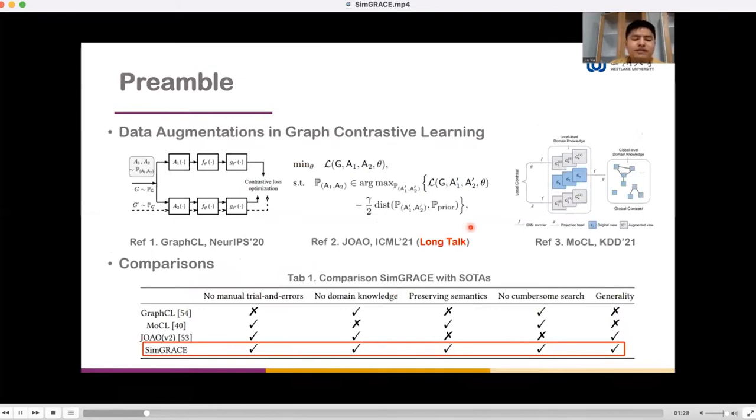Currently, data augmentations in GCL that are designed to preserve semantics broadly fall into three categories. First, the augmentation can be manually picked per dataset by trial and error, like GraphCL. Second, the augmentation can be obtained with compositional optimization. Third, the augmentation can be obtained with domain knowledge as guidance, like MOCL. All of this limits the efficiency and more general application of current methods.